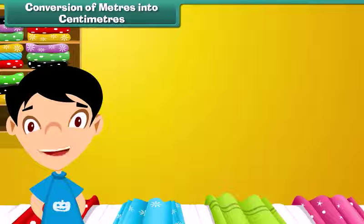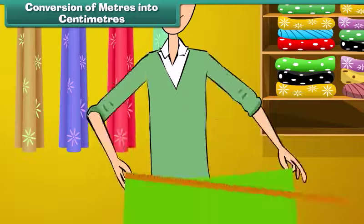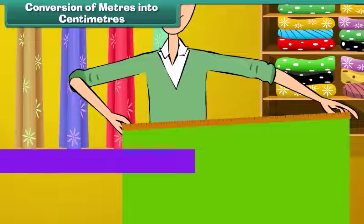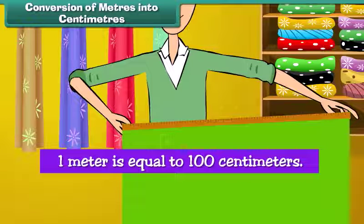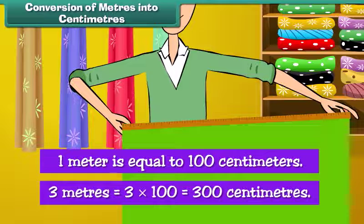Conversion of meters into centimeters: Let us understand the relationship between meters and centimeters. One meter is equal to 100 centimeters. Therefore, three meters is equal to 3 into 100, which is 300 centimeters.